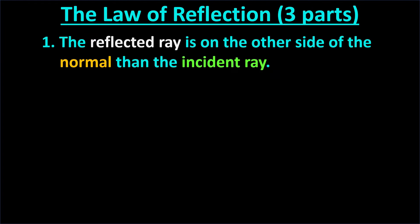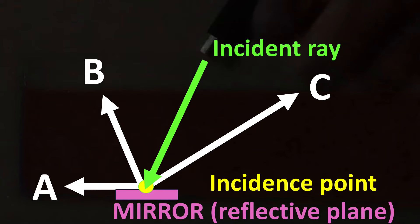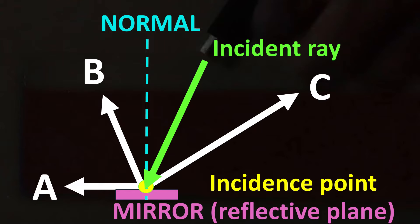To solve this problem, we'll use the law of reflection, which has three parts. Part 1 says that the reflected ray is on the other side of the normal than the incident ray. The incident ray is the name of the light beam coming from the light source. It hits the incidence point, which is on the reflected plane. The reflected ray is the ray of light that leaves the incidence point. The normal is an imaginary line defined as being perpendicular to the reflected plane and going through the point of incidence. According to Part 1, the incident ray and reflected ray must be on opposite sides of the normal. Choice C is on the same side of the normal as the incident ray, so choice C is a wrong reflected ray choice and we can eliminate it.